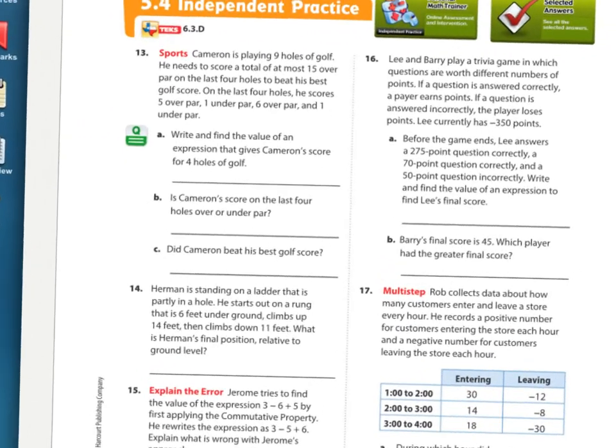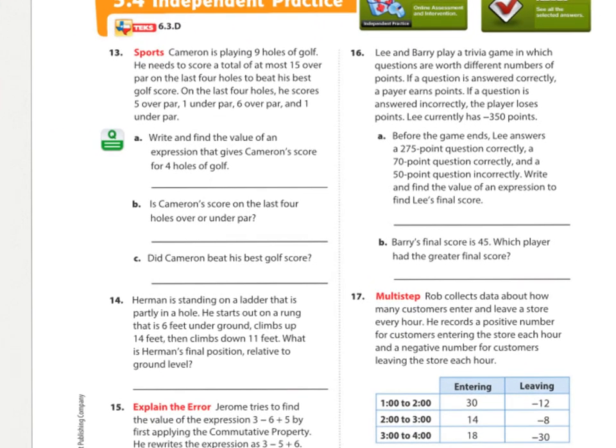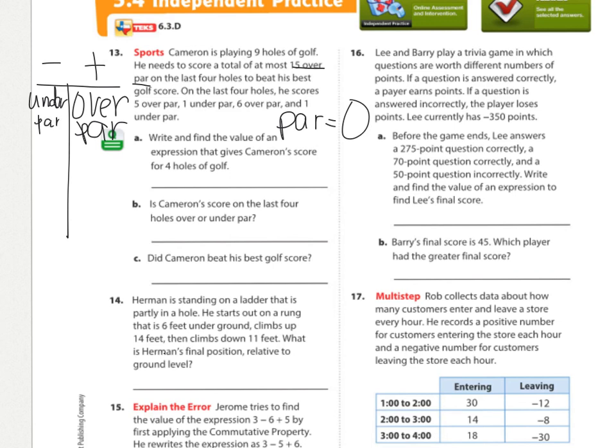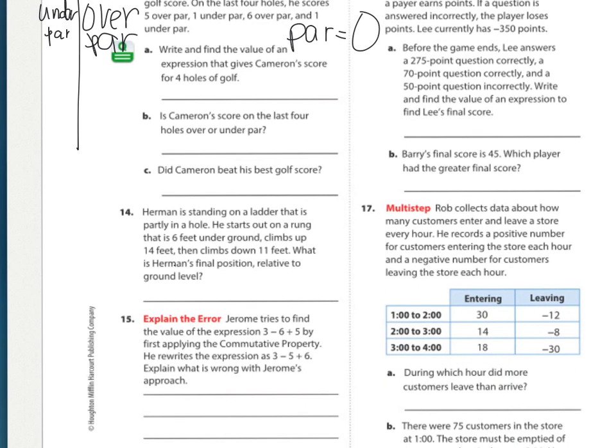Let's see if there's anything new in any of these problems. Fifteen over par is new. Right here. Fifteen over par. Par is zero. Put these in your notes. Par is zero. So over par is a positive. Under par is a negative. I'm looking to see if there's anything new on here. I think that's it. That's it.